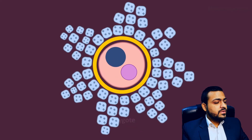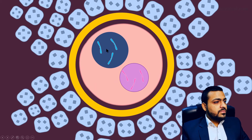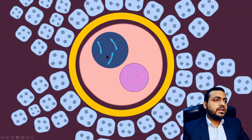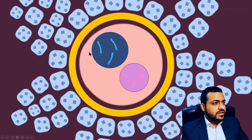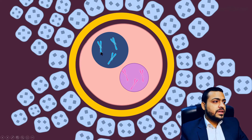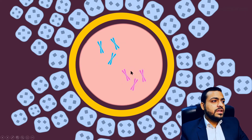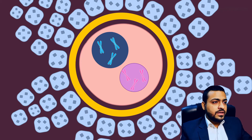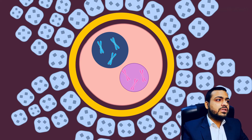The zygote consists of 23 chromosomes from the male and 23 from the female, but initially only single copies — chromatids — are present. These 23 chromatids transmitted into the ovum, which also had 23 chromatids, must undergo DNA replication (the S phase of interphase) to form complete chromosomes. After that, the cell undergoes a cycle of mitosis — a cycle of cell division — so it can be divided into two daughter cells.